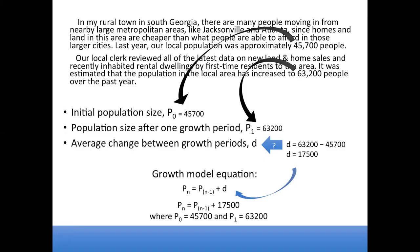It's also useful to restate or make note of some of those initial population sizes, because when we want to use this recursive model that we have written, we need some starting place, such as P1, to then add the 17,500 to in order to compute P2.